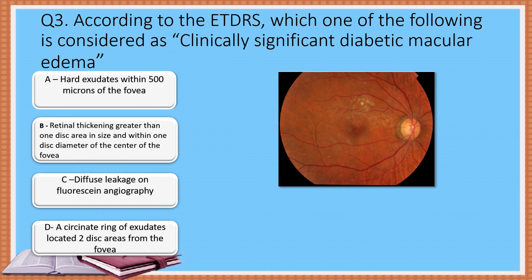Question 3: According to the ETDRS, which one of the following is considered as clinically significant diabetic macular edema? Option A: Hard exudates within 500 microns of the fovea. Option B: Retinal thickening greater than one disc area in size and within one disc diameter of the center of the fovea.